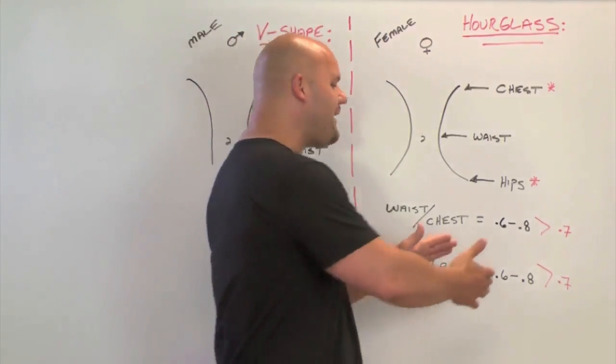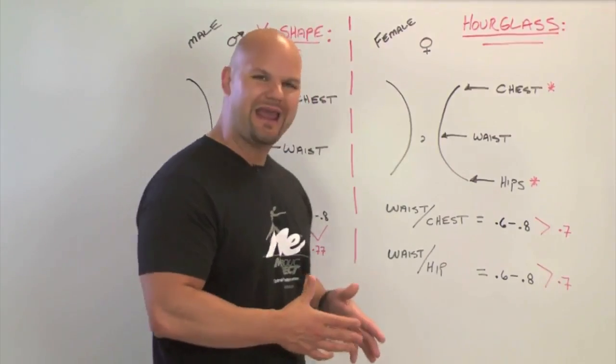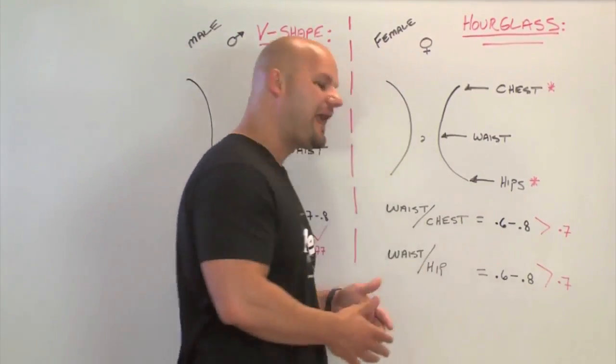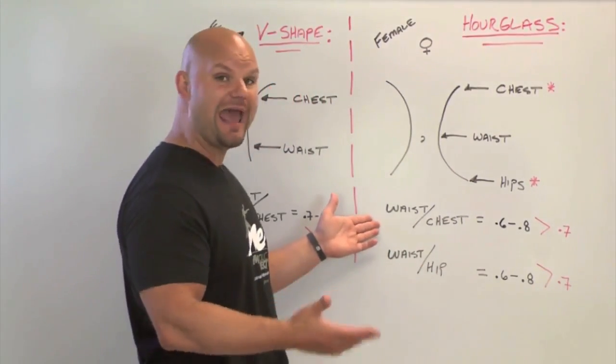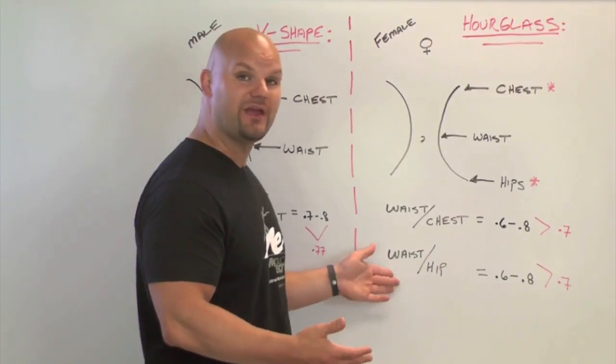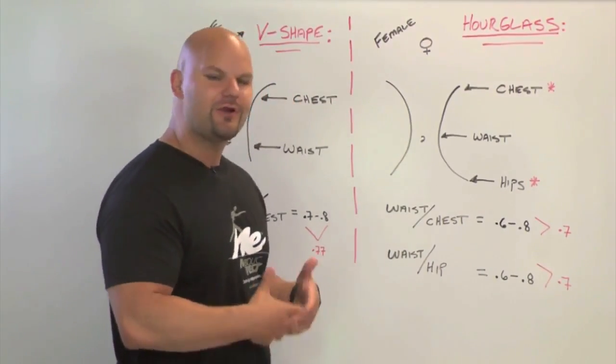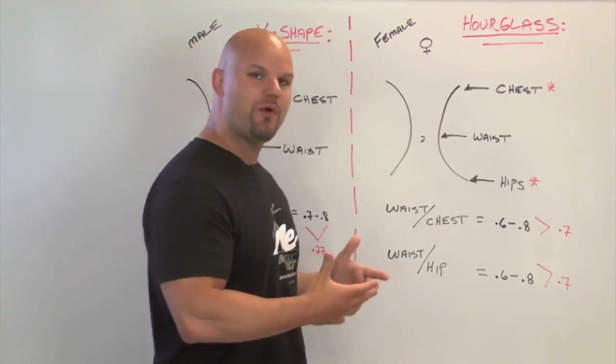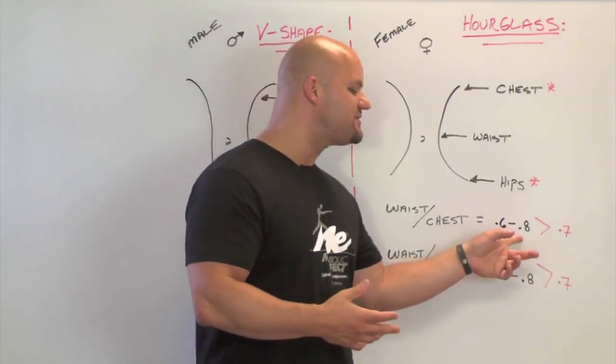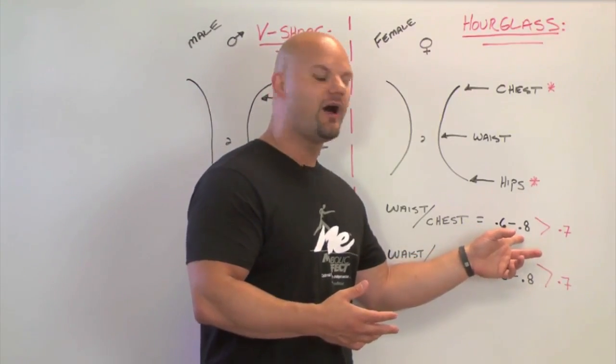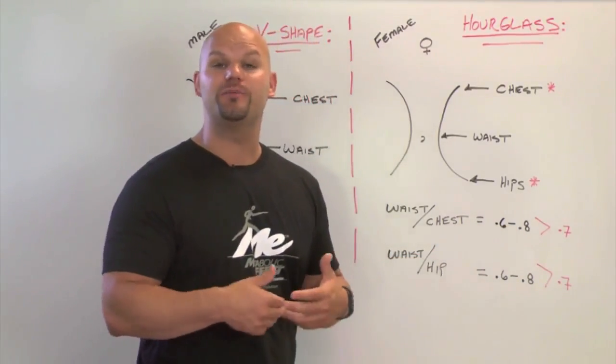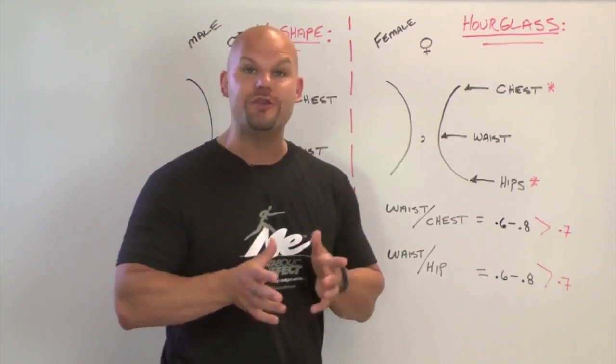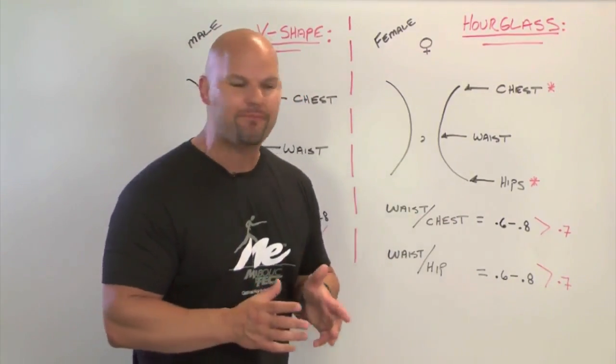But the numbers you're aiming for are between 0.6 and 0.8 for both the waist to chest ratio, the apple number, and the waist to hip ratio, the pear number. So if you're an apple shaped woman, same with the man, if you lose weight but you see your number going up here above 0.8, then you know you're becoming a more pronounced apple, not what you want to have happen.